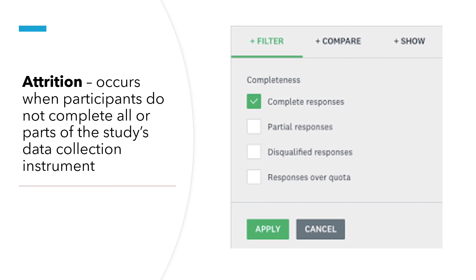The next threat is attrition — another word for loss of data — which occurs when participants do not complete all or parts of the study's data collection instrument. This is unavoidable and happens especially in quantitative surveys when you are not monitoring participants' responses. If a questionnaire is unnecessarily long, some participants will not fill it out accurately or completely. You must recognize research where participants did not respond correctly, and similarly recognize and handle such incomplete responses in your own research.